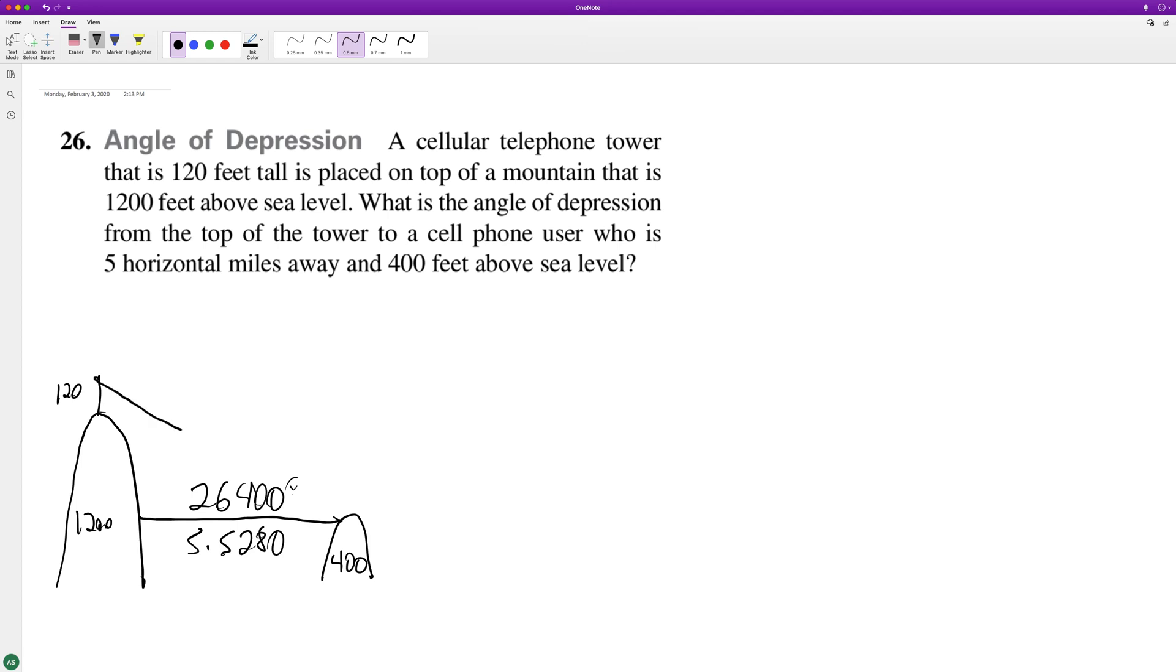Okay, so we want to figure out the angle of depression from the tower. We know the horizontal distance is 26,400 feet, and we know the vertical distance is 1,200 plus 120, so 1,320 minus 400. We're going to take the sine of theta is equal to...